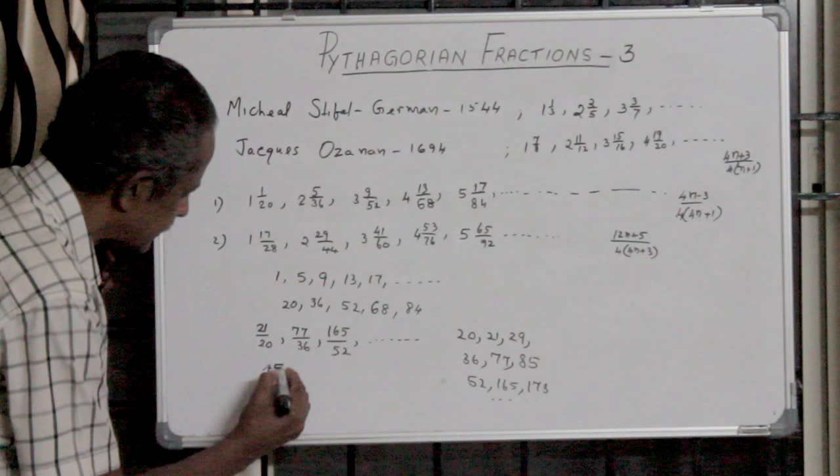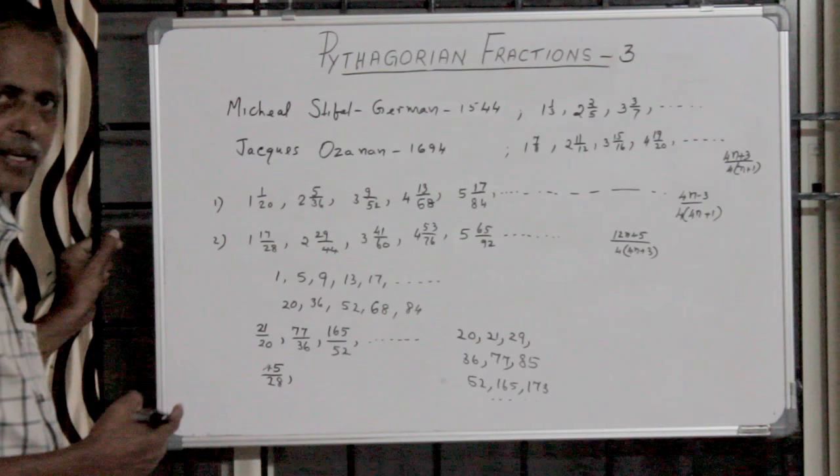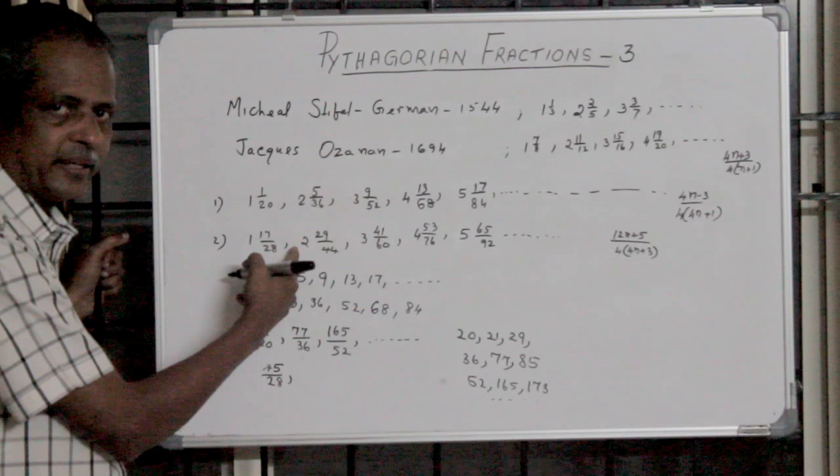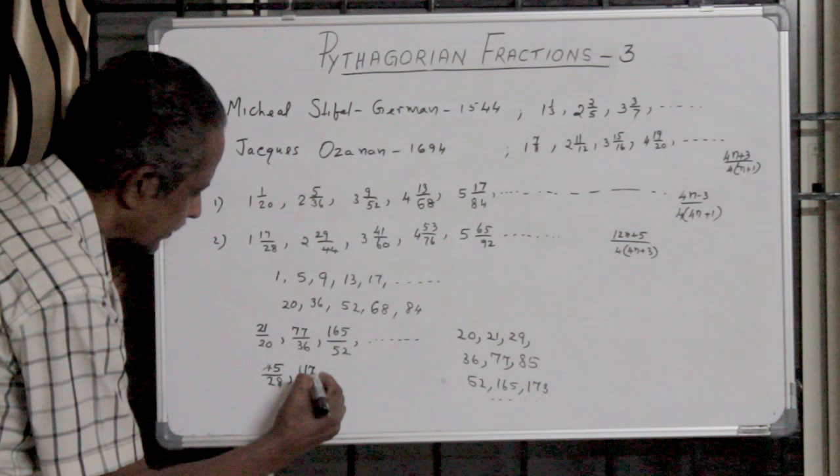Here 44 into 2 is 88, 88 plus 29, just add 30. 44 into 2 is 88, plus 30 is 118, then minus 1 is 117 by 44.